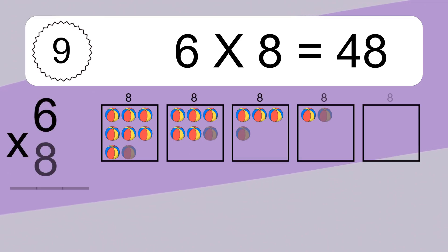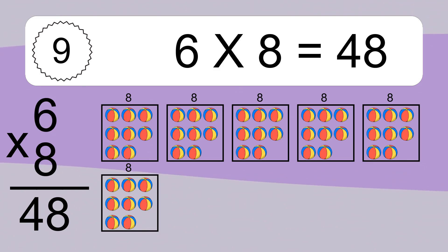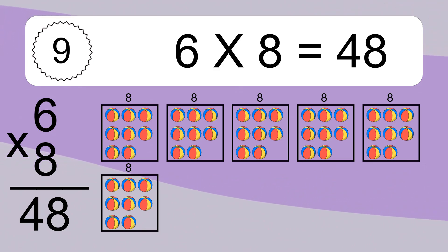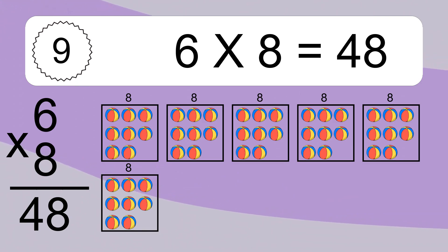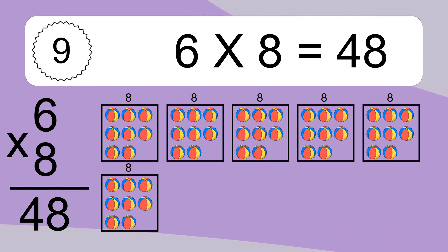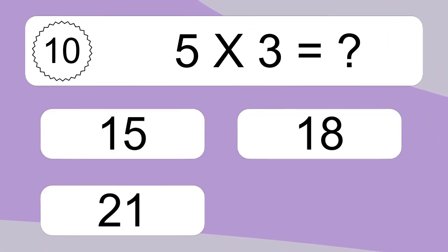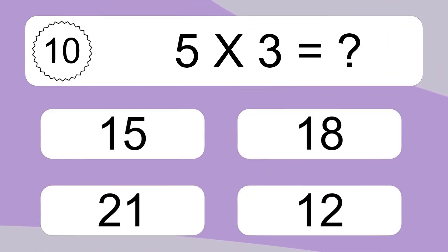6 times 8 equals what? 6 times 8 equals 48. We have 6 boxes, and each box has 8 colorful balls inside. If you count all the balls in all the boxes together, you will have 6 times 8 balls.